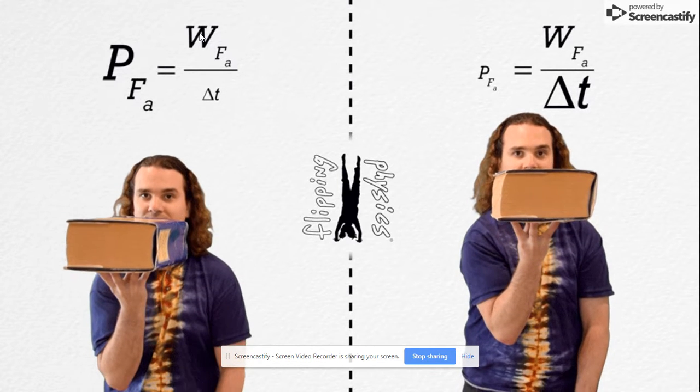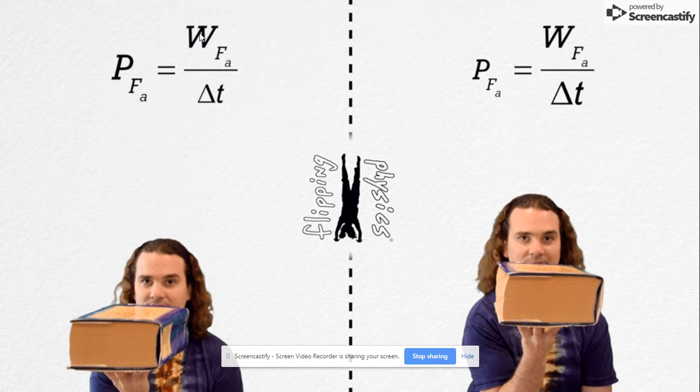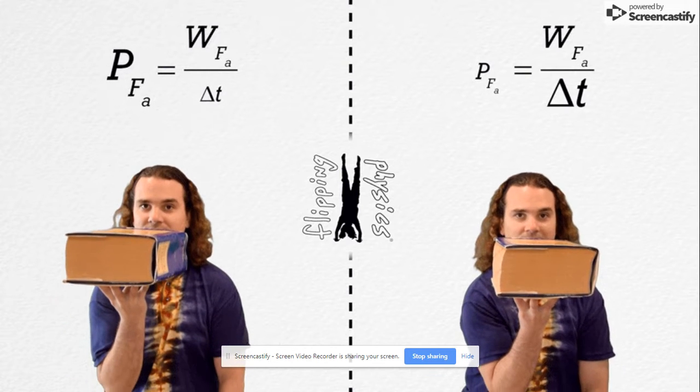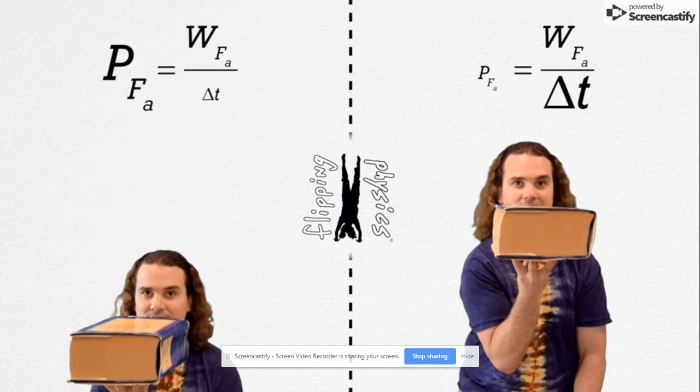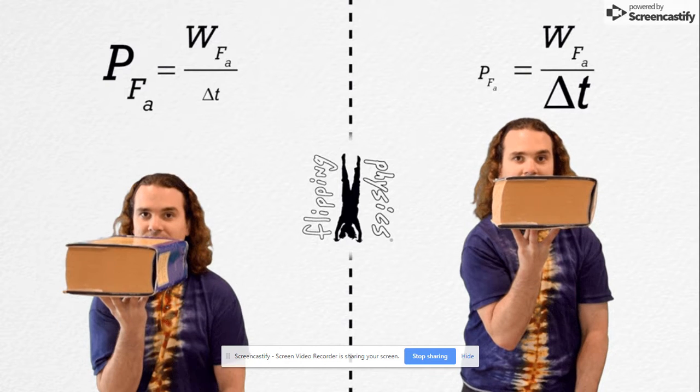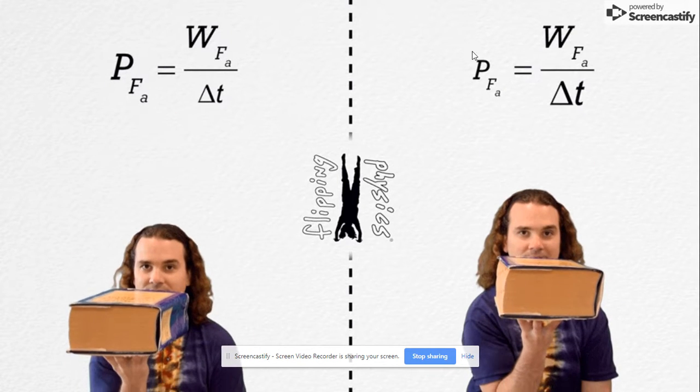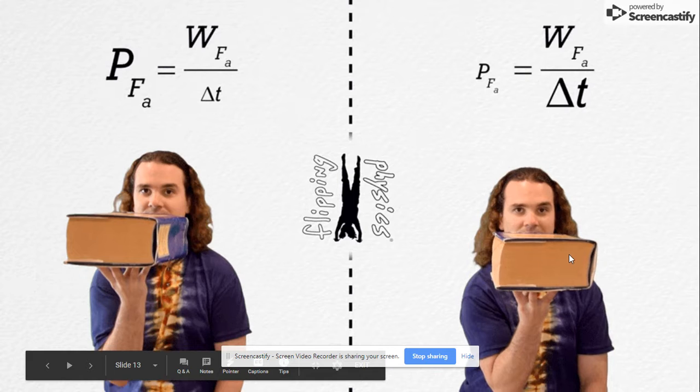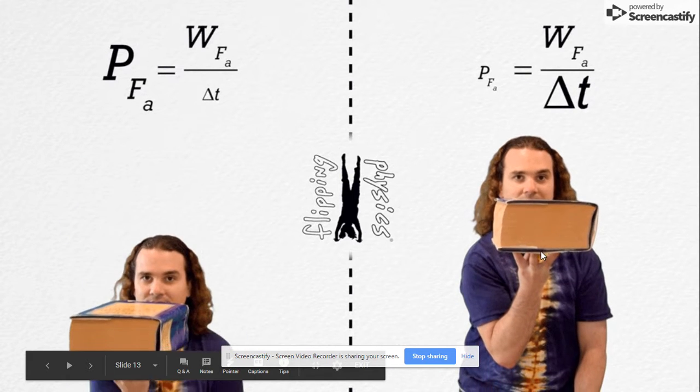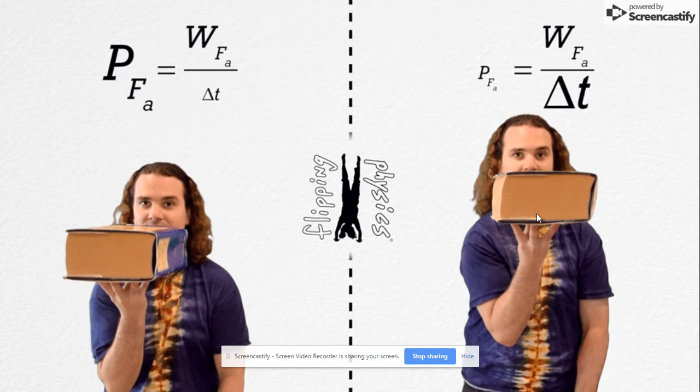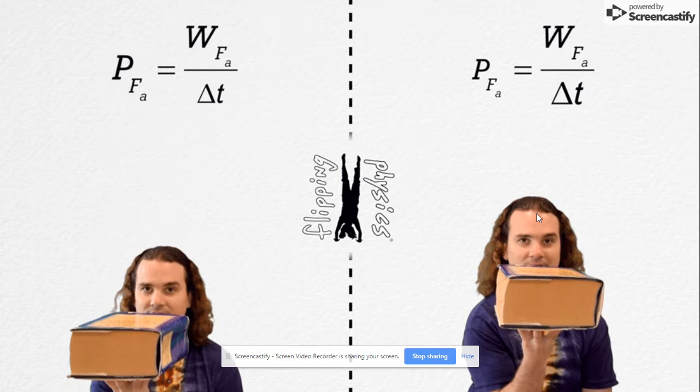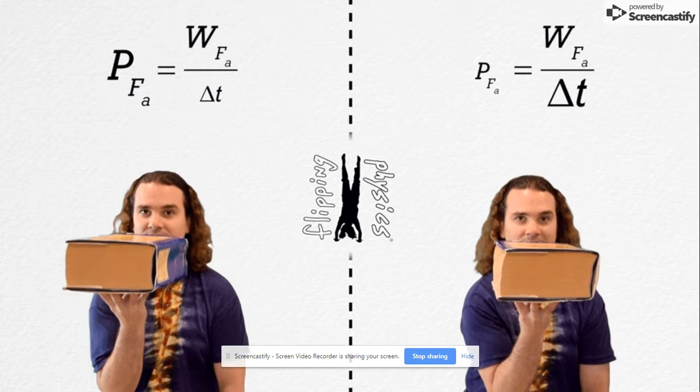W, in this case, stands for work. In this case, he is doing work on the book. A dude with tie-dye shirt doing work upon the book that he is lifting. Lifting that book, applying a force over a given distance. One side is going slow. One side is going fast. What is up with this?